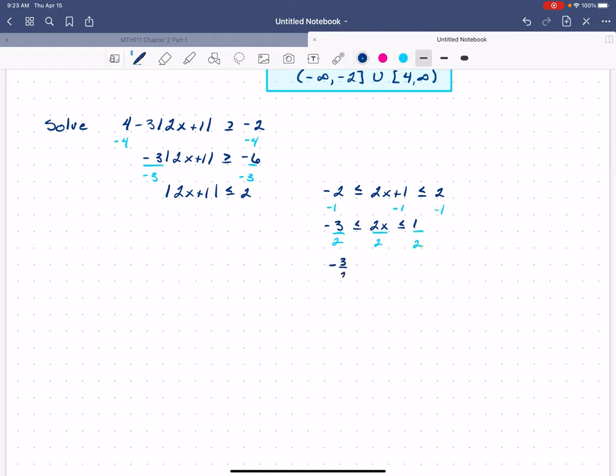And negative 3 halves is less than or equal to x is less than or equal to 1 half. That is our solution. In interval notation that would look like negative 3 halves to 1 half, inclusive. And this is the answer, so any x between negative 3 halves and 1 half will satisfy our original inequality.